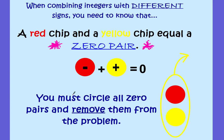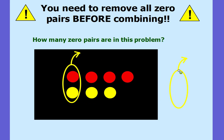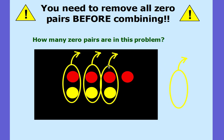When combining integers using your models or integer chips, you must circle all the zero pairs and remove them from the problem — what I call loop it and pull it out. Before we do examples, how many zero pairs do you see in this problem? Let's loop them and pull them out. There's one zero pair, two zero pairs, and three zero pairs. A positive and a negative make a zero pair. One red, one yellow — one red, one yellow — one red, one yellow. But the last red has no yellow, so that's not a zero pair. We have three zero pairs.